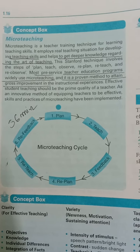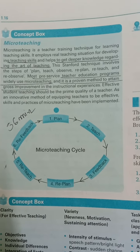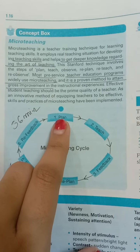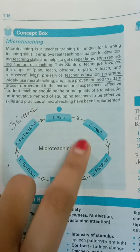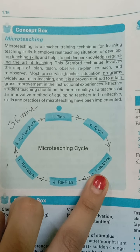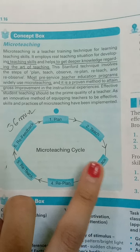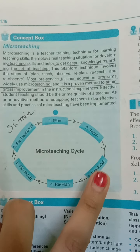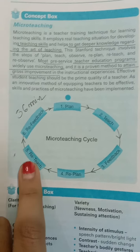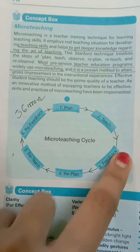This Stanford technique involves the steps of: plan — first plan how to teach, then teach, then take feedback from students. From the feedback you understand what needs to be improved, so then re-plan, re-teach, and re-feedback. This cycle continues.